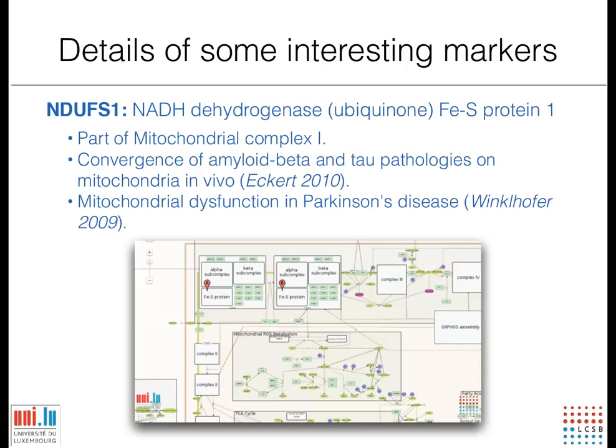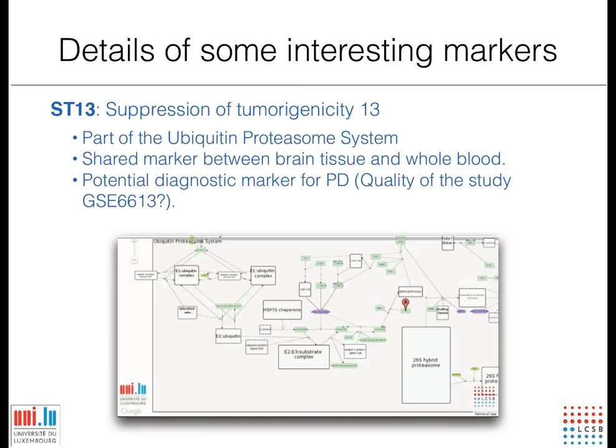This is a quick overview of the studies we used. We mainly used public studies of PD and also for checking the cross-disease markers. As you can see, most of them are from postmortem brain tissue and two of them are from blood tissues.